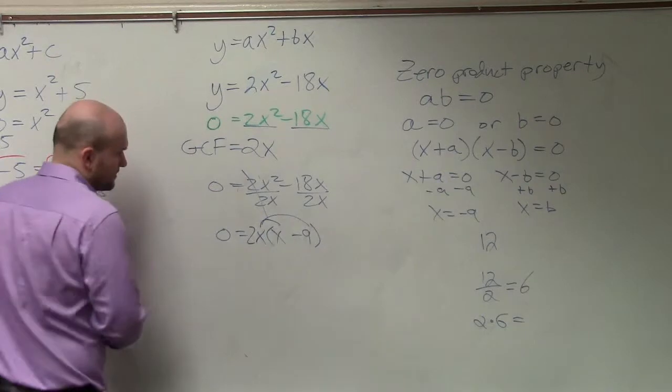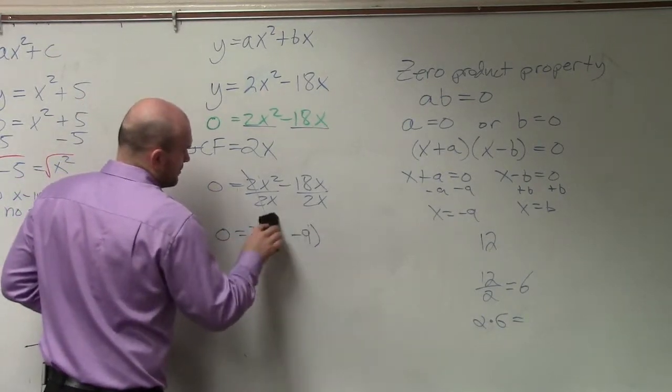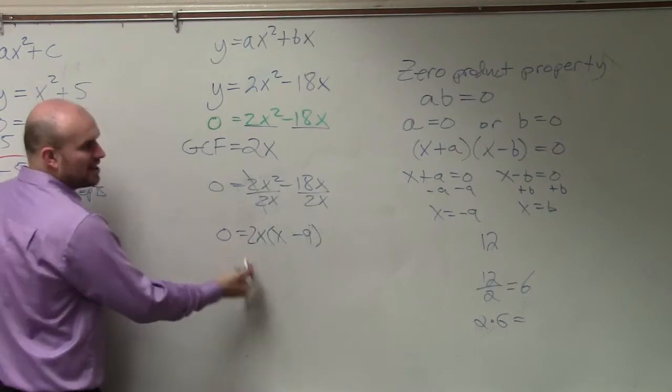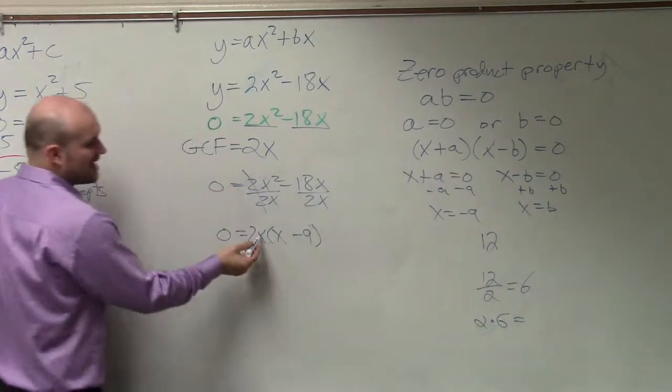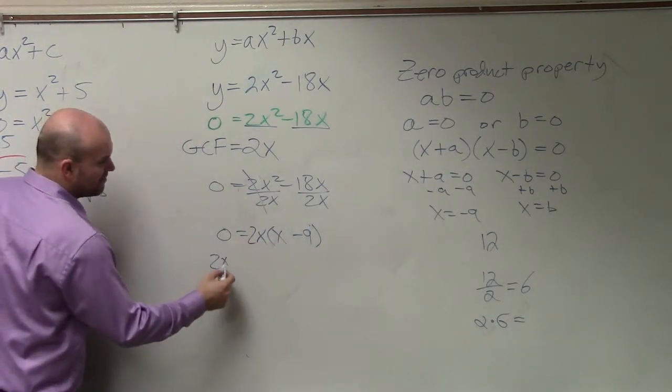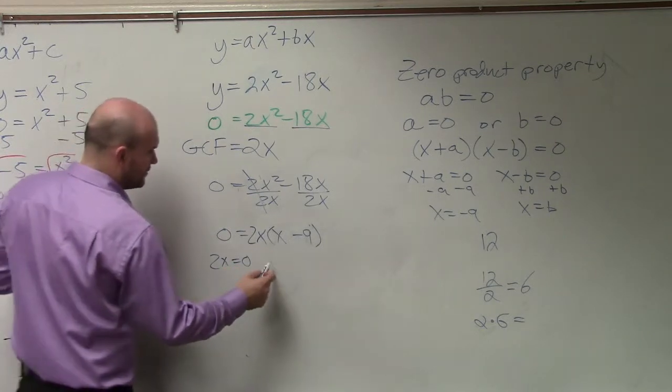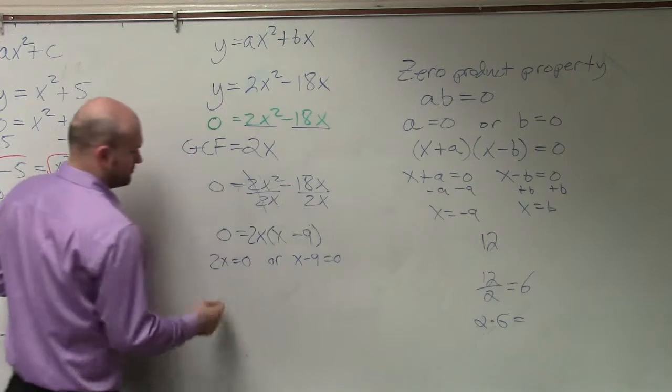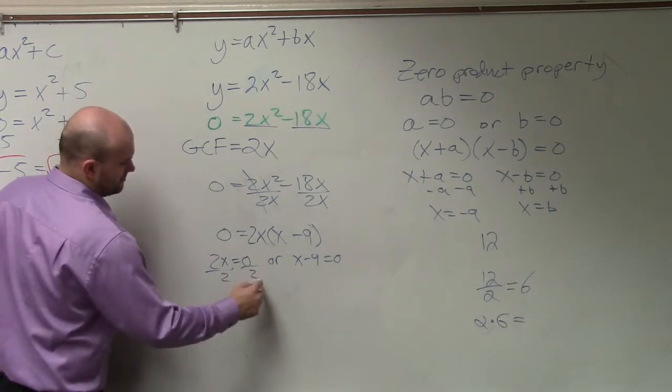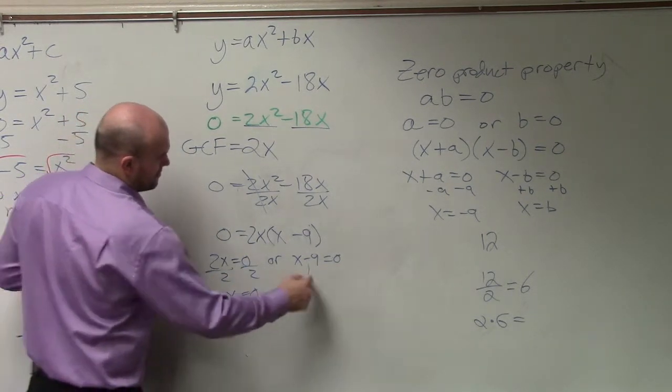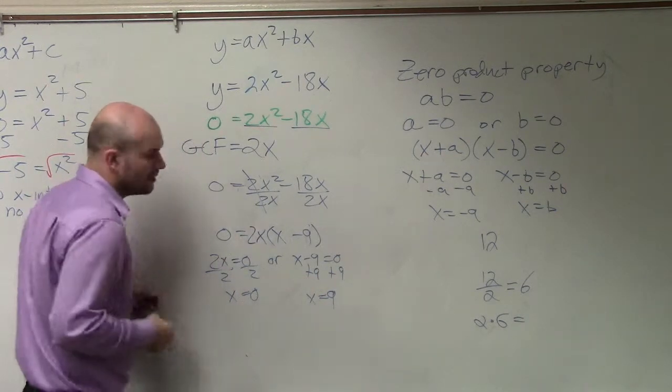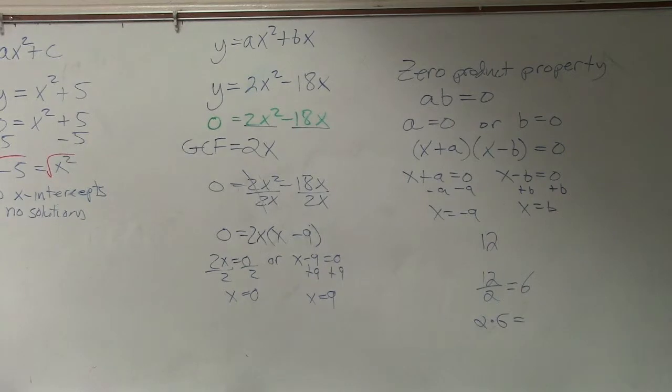But now, remember, we need to apply the zero product property. So since I have the product equal to zero, I set both of my factors equal to zero. And there you go. Those are your two answers. Your two factors are 0 and 9. Where'd you come from? Where did you come from?